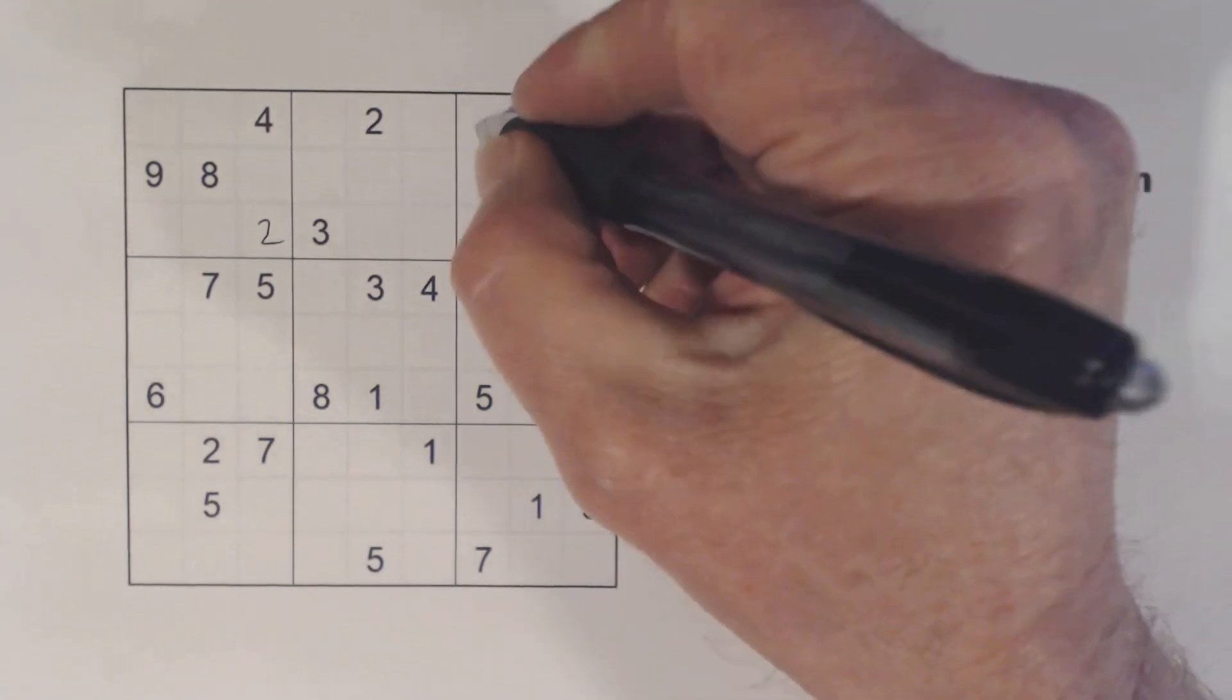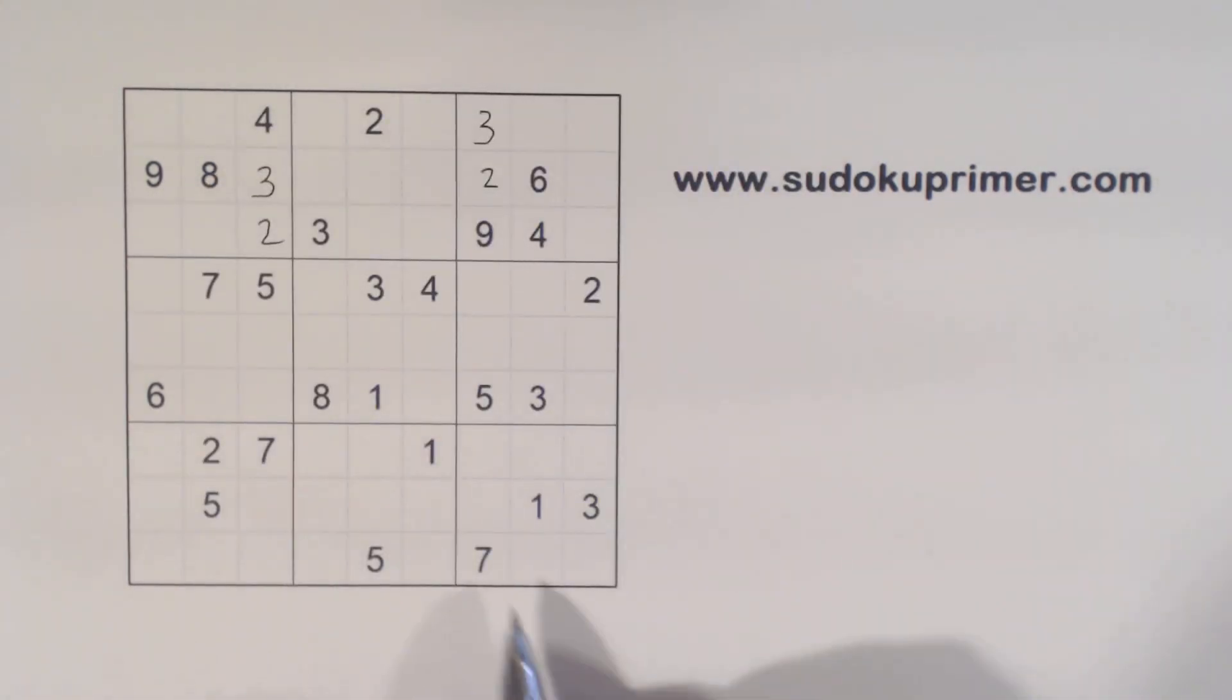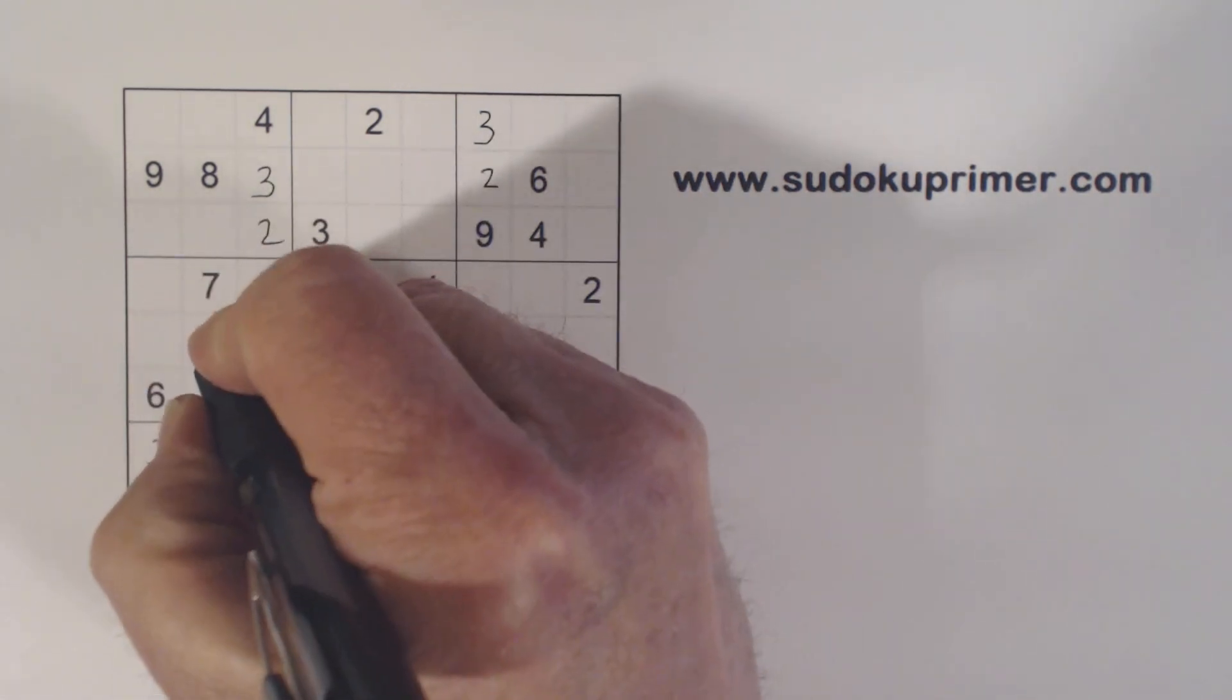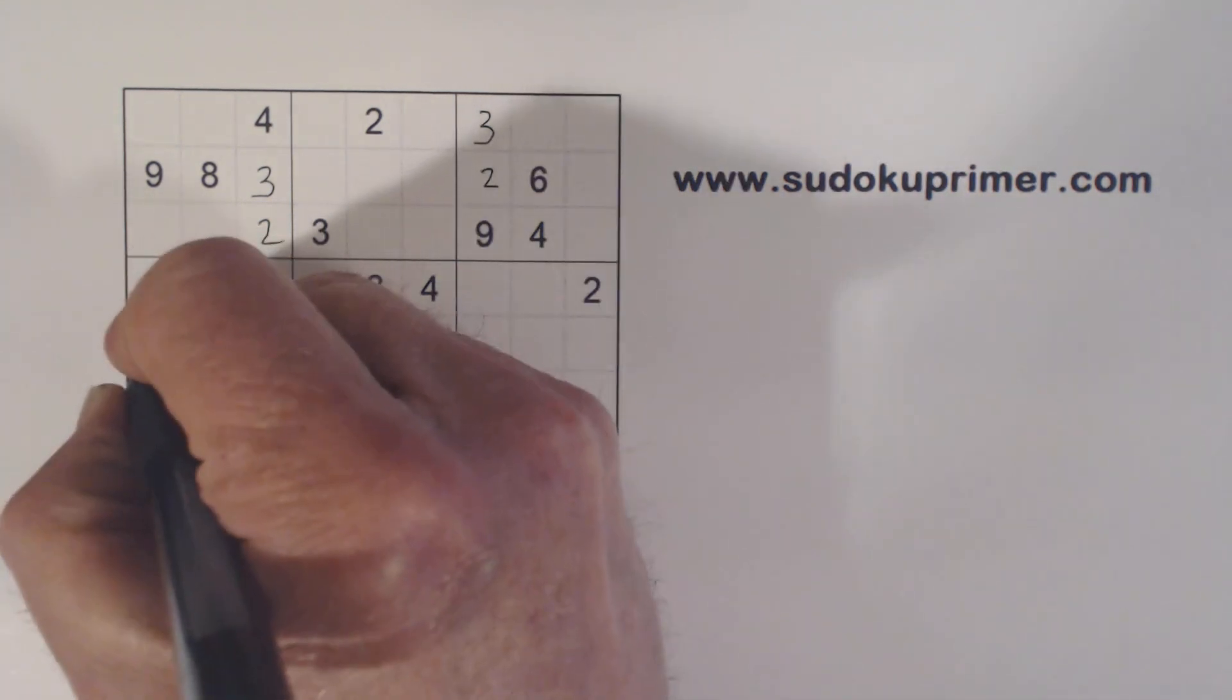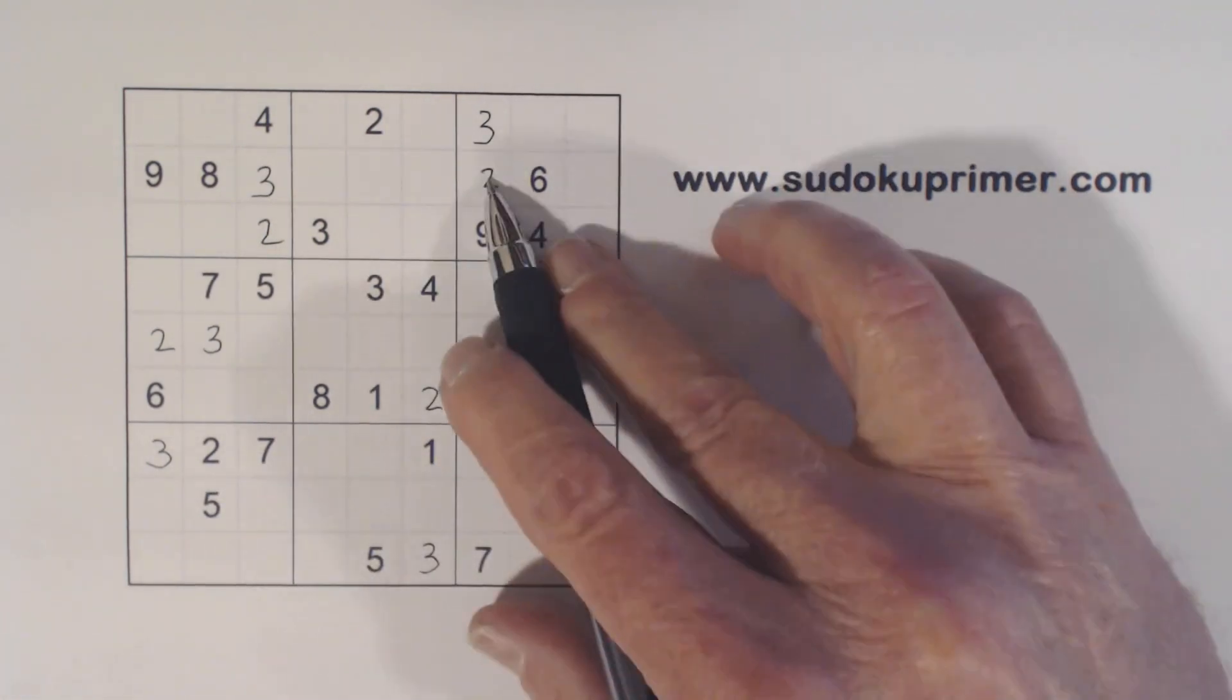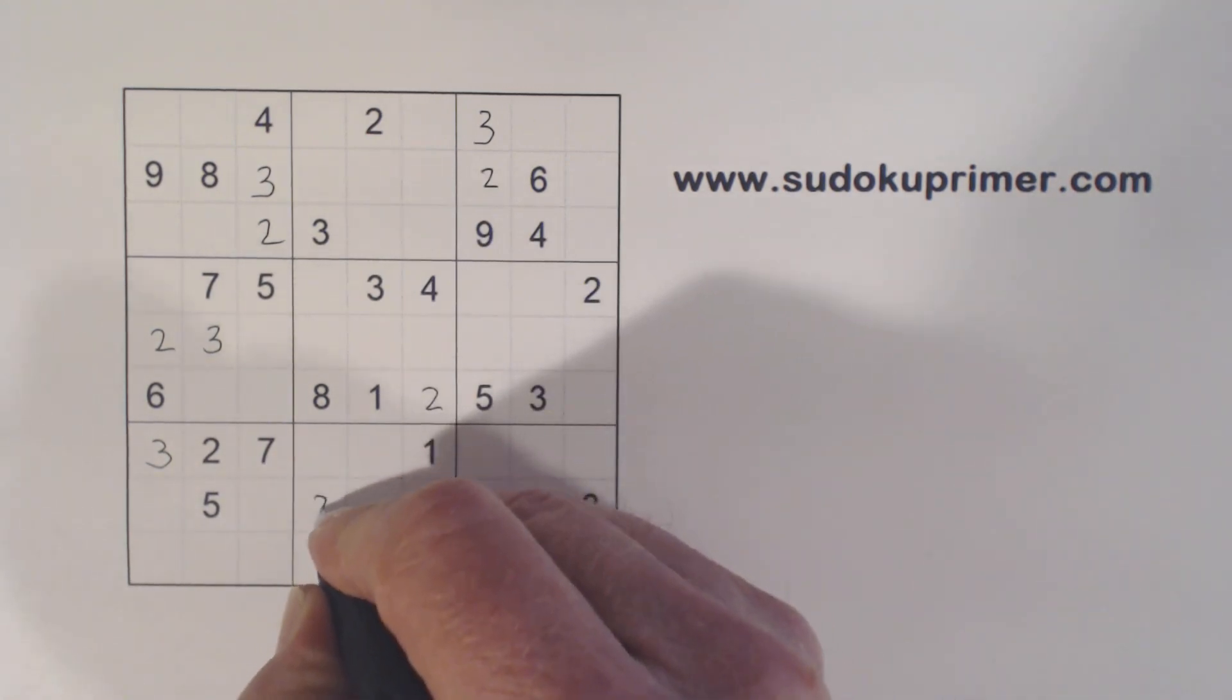And then we've got 3s here, and we can place all our 3s. Now we've got more 2s we can fill in throughout the grid, and that's all our 2s.